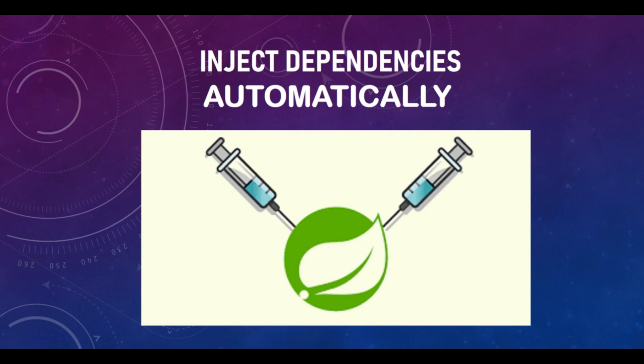If you have followed the previous video about dependency injection in Spring Boot, you should have known that there is something called the Spring container, which manages all the beans, objects, and dependencies inside it. Using autowiring, you can have loosely coupled applications where objects will not depend on each other completely — rather, the Spring container will inject the dependencies automatically.